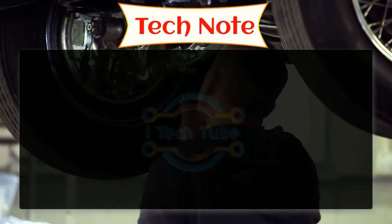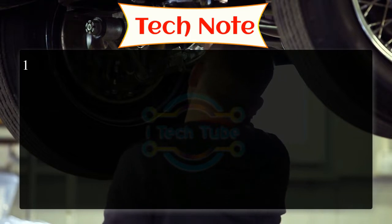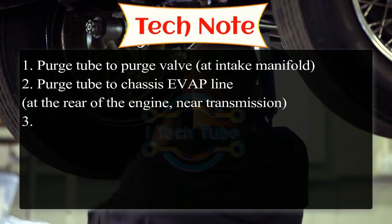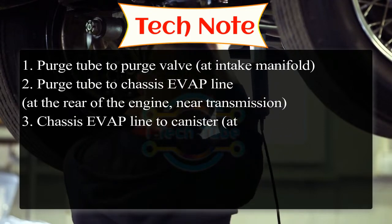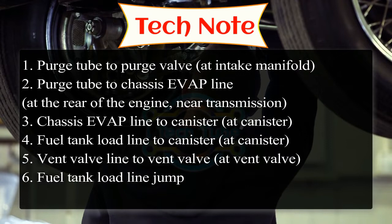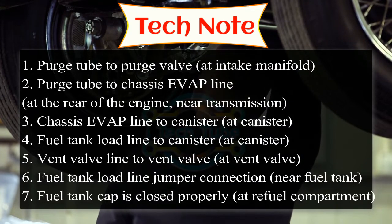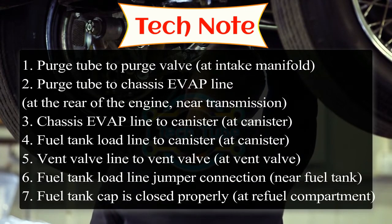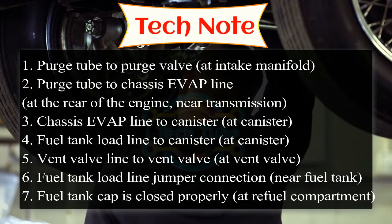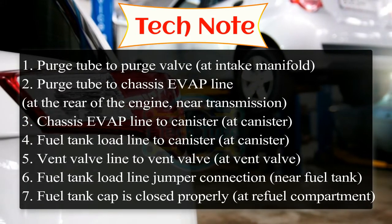The 7 critical connections are: Number 1 — purge tube to purge valve at intake manifold. Number 2 — purge tube to chassis evap line at the rear of the engine near transmission. Number 3 — chassis evap line to canister at canister. Number 4 — fuel tank load line to canister.